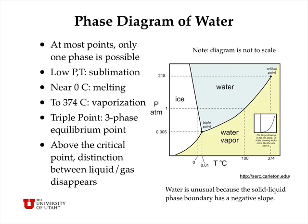The other important point on this diagram is the triple point — that is the only point where you can have ice, liquid water, and water vapor in equilibrium with each other. That occurs at 0.01 Celsius and 0.006 atmospheres pressure.